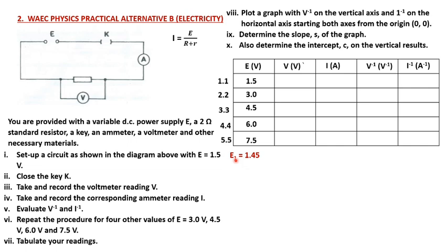For the first EMF, I'm going to use 1.45 volts. And the subsequent values will be multiples of this. So I multiply by two to get the value for the second, giving 2.9. Then I multiply by 3, by 4, and by 5. So these give me the values of the EMF.